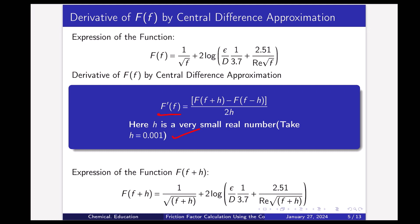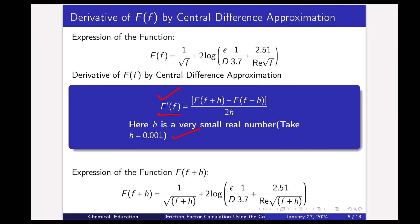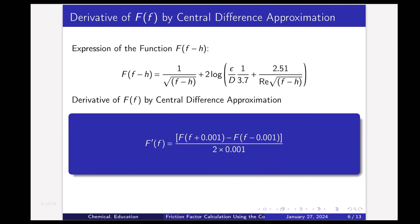First, we have to calculate F(f+h) and F(f−h). We plug (f+h) or (f−h) in place of f in the expression. So the central difference approximation becomes: F′(f) = [F(f+0.001) − F(f−0.001)] / (2 × 0.001).